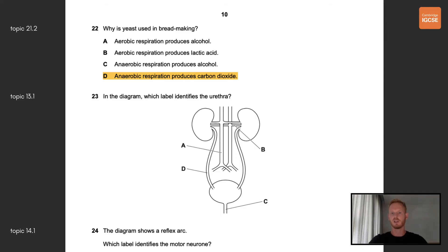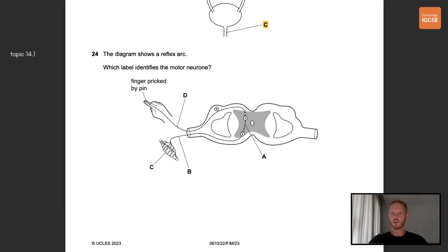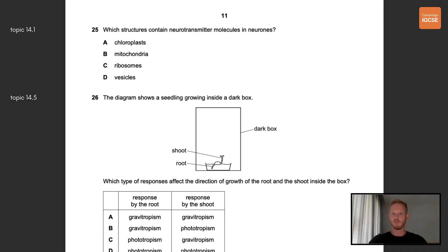Number 23, in the diagram which label identifies the urethra? A and B are blood vessels and D is one of two ureters, which direct urine from the kidneys to the bladder. The correct answer is therefore C. Number 24, the diagram shows a reflex arc, which label identifies the motor neuron? D is a sensory neuron, A is a relay neuron and B a motor neuron. Motor neurons carry impulses from the central nervous system to effectors, in other words muscles and glands. Number 25, which structures contain neurotransmitter molecules in neurons? Neurotransmitter molecules are contained within membrane bound structures called vesicles.